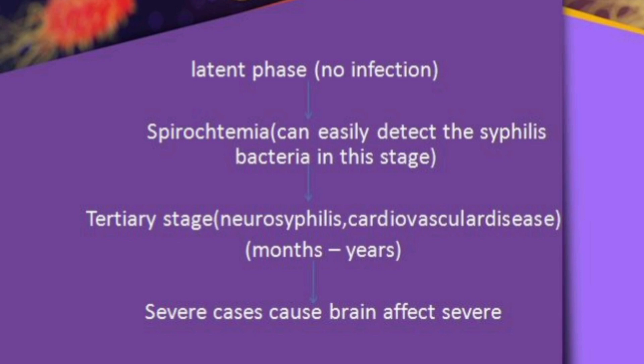If you do the blood test during spirochetemia, it will be positive. After spirochetemia, you move into the tertiary stage where you get neurosyphilis — affecting your neurons — and cardiovascular diseases including heart-related problems. This can persist in your body for months to years. At that point, brain effects include blindness, deafness, and all brain functions slowly deteriorating.